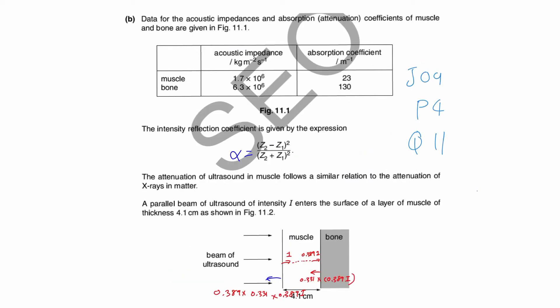They give you the acoustic impedance and absorption coefficient for both muscle and bone, and the intensity reflection coefficient. In case you are wondering what the intensity reflection coefficient is — sometimes people put the symbol alpha here. The attenuation of ultrasound follows a similar relation to the attenuation of x-rays, so you can use back the same formula: I = I₀e^(−kx). A parallel beam of ultrasound intensity I enters a layer of muscle of thickness 4.1 centimeters.